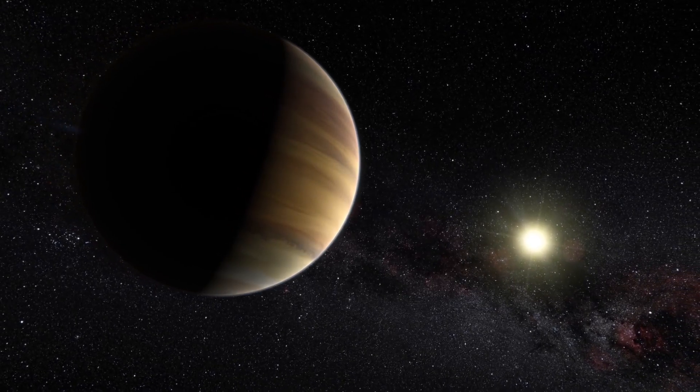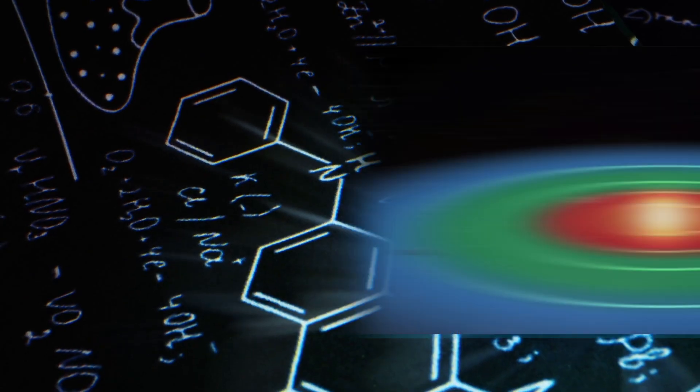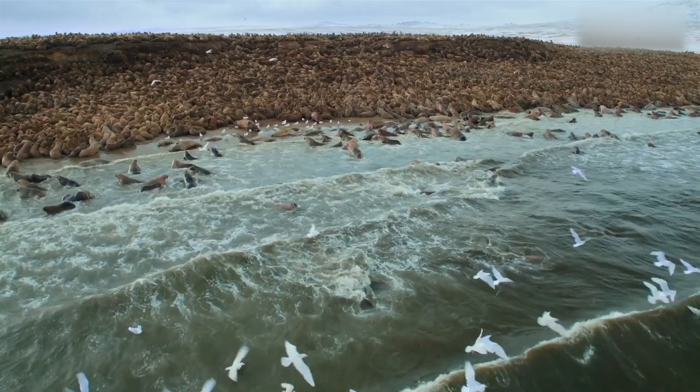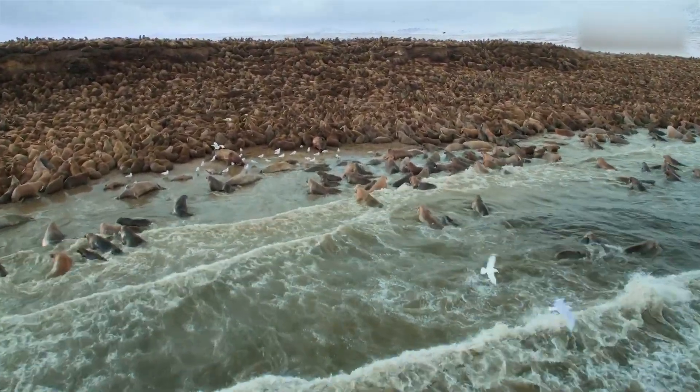So, when looking for potential life on other planets, scientists begin by searching for planets within this Goldilocks zone because it's where the conditions are most promising for life, as we understand it, to exist.